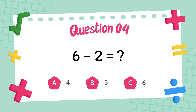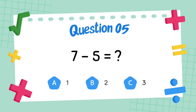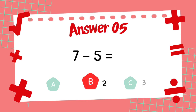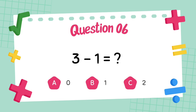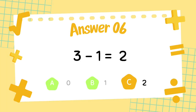What is 6 minus 2? The answer is 4. What is 7 minus 5? The answer is 2. What is 3 minus 1? The answer is 2.